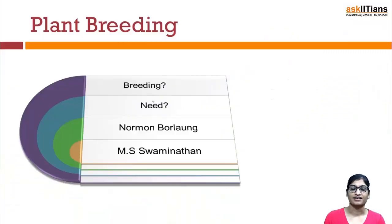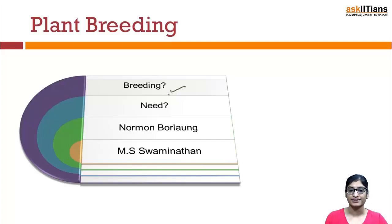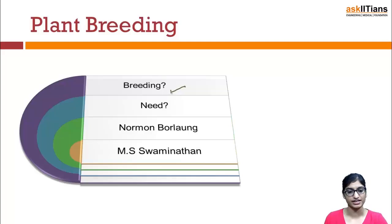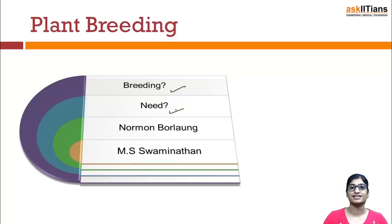Plant breeding. Before starting, do you know what breeding is? In animal breeding I have mentioned this too. In the field of botany, plant breeding is basically the genetic manipulation done for crop improvement — that is breeding.